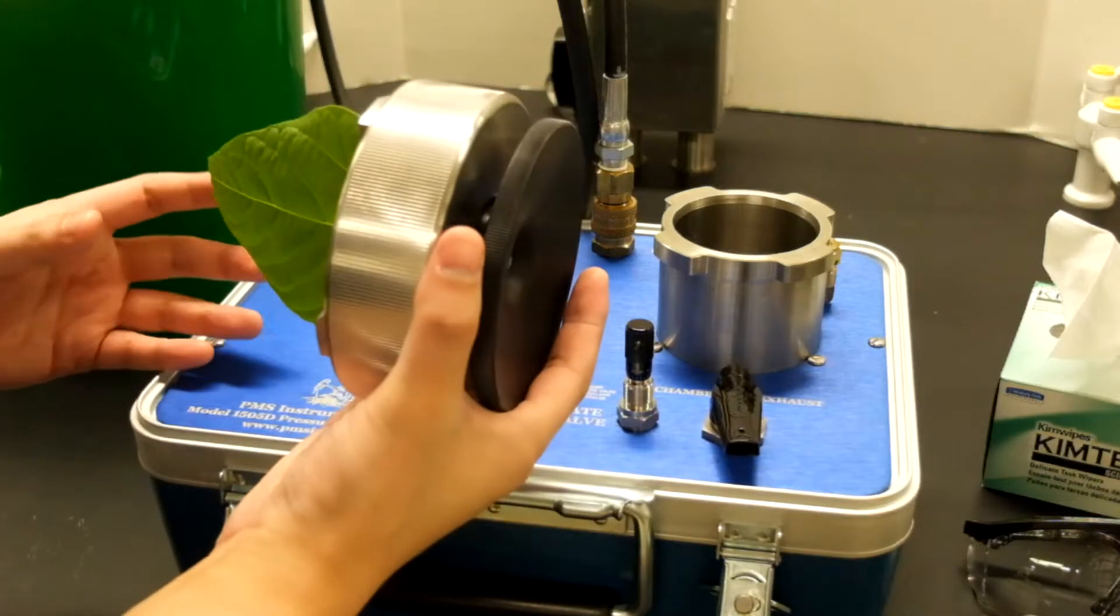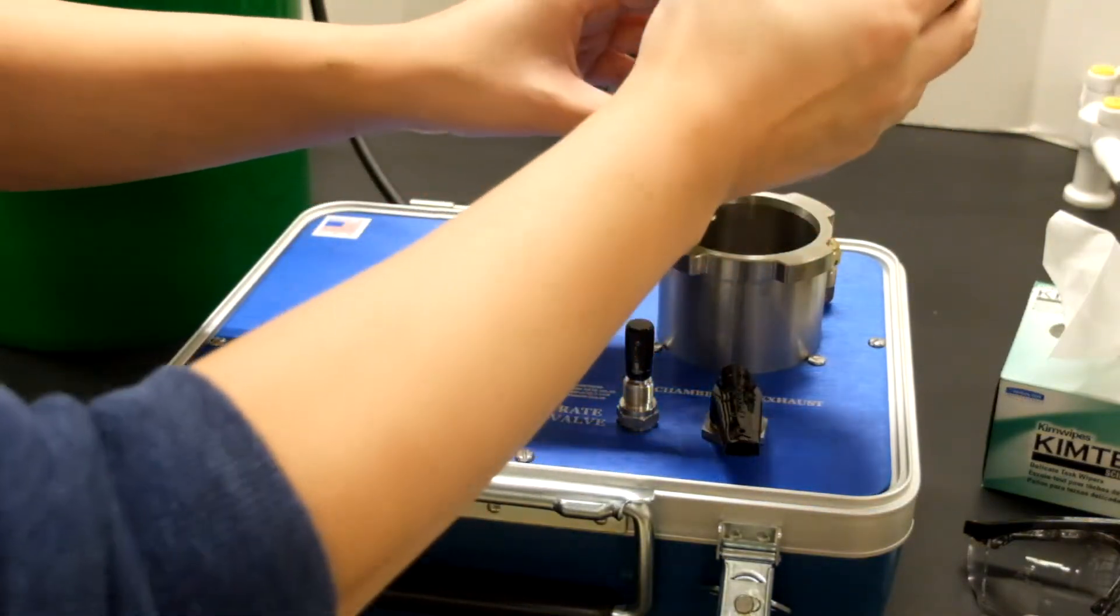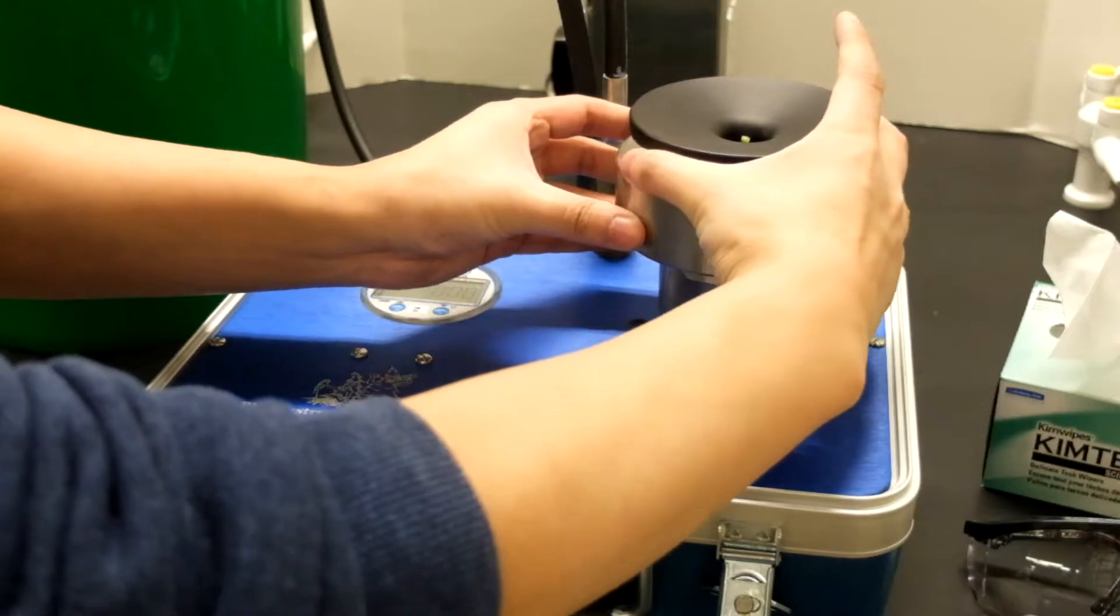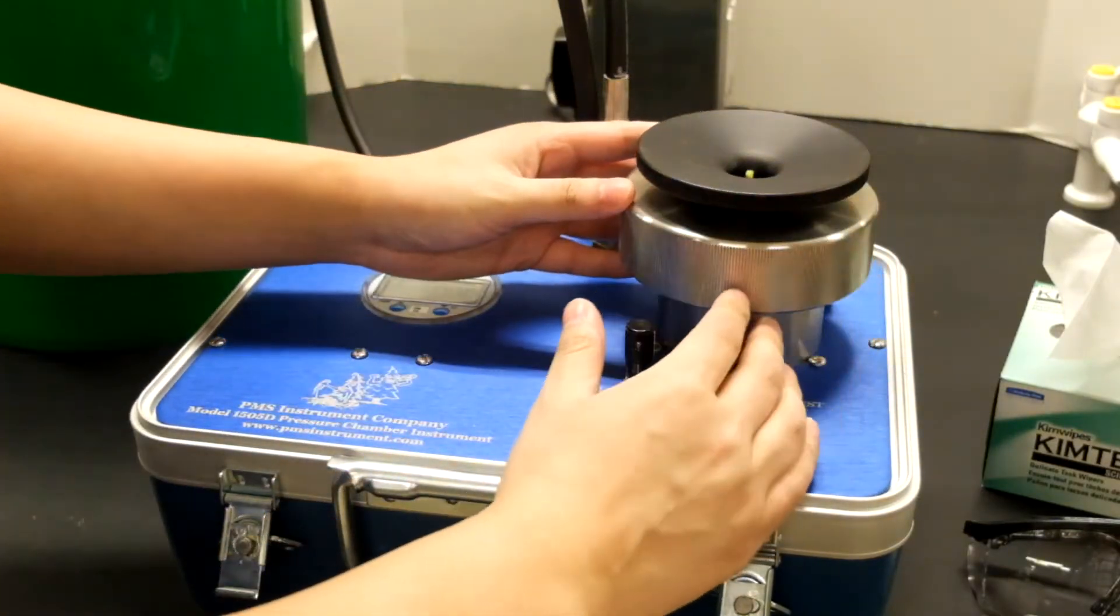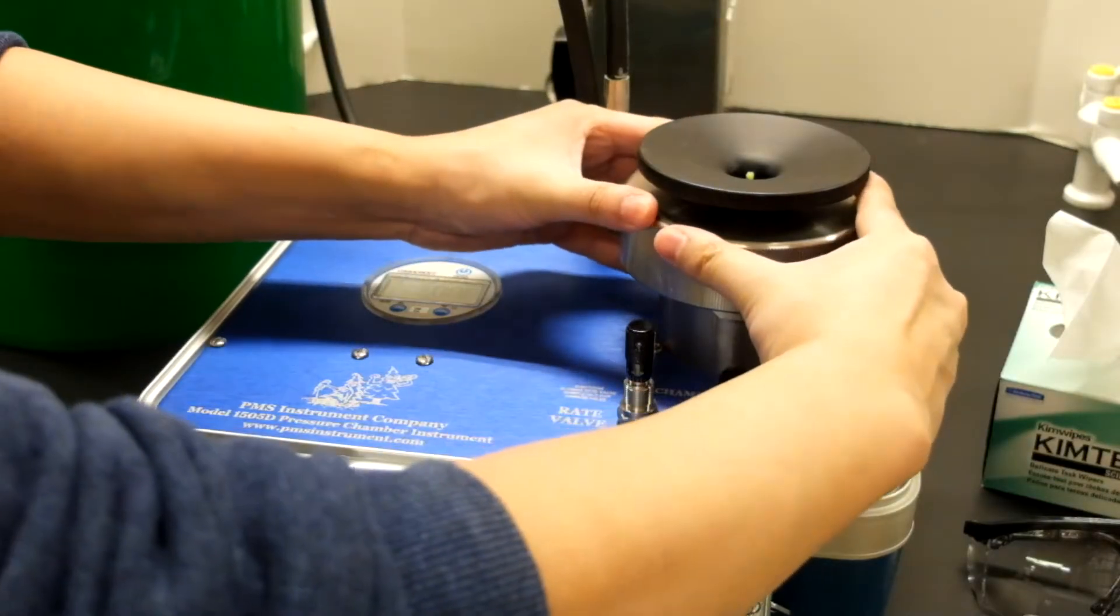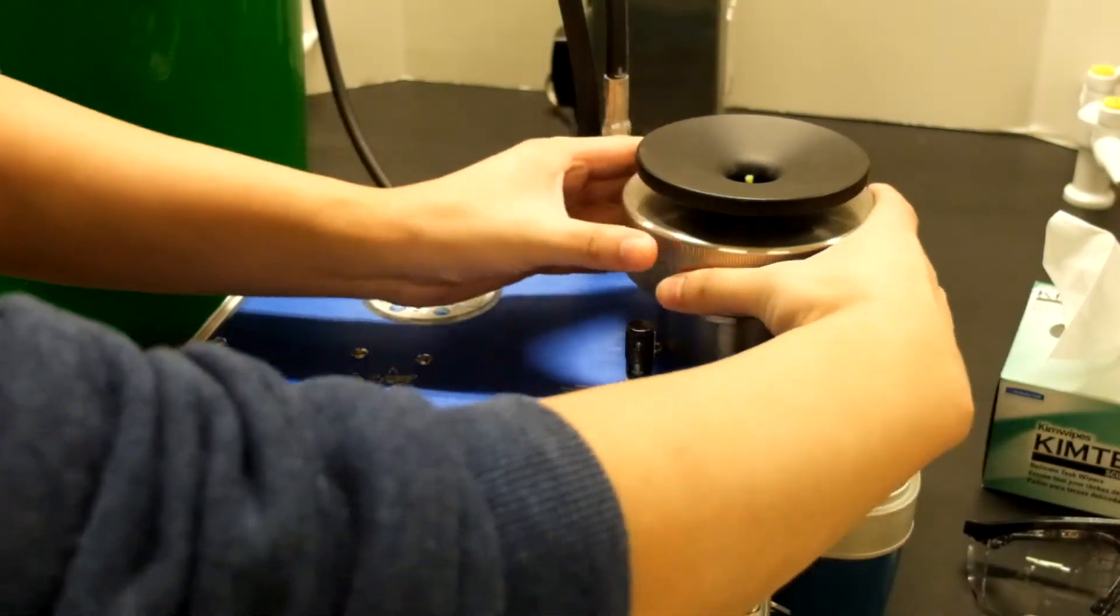With our leaf secured in the gasket we can then put the leaf inside the chamber. The gasket will fit on top. To secure the gasket we will press down on the metal lid and turn clockwise.